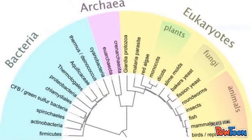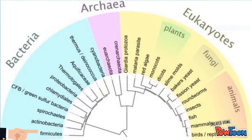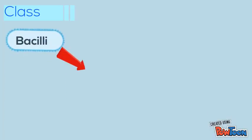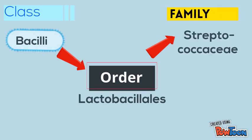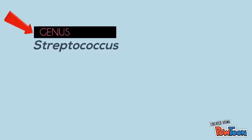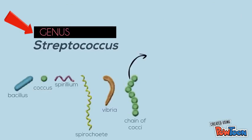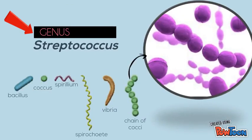In the tree of life, we can find them in the Firmicutes phylum. They are part of the Bacilli class, Lactobacillales order, member of the Streptococcaceae family, and a part of the Streptococcus genus.